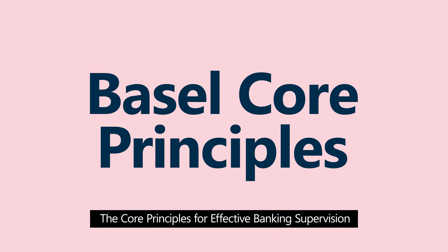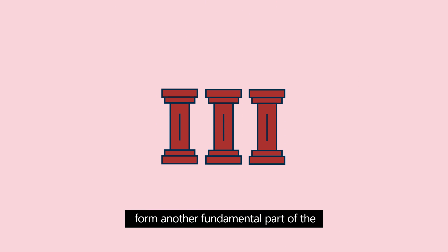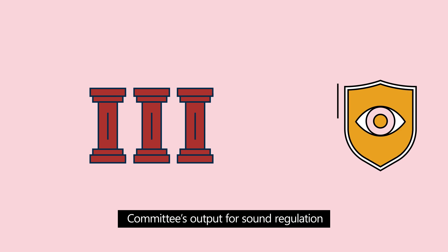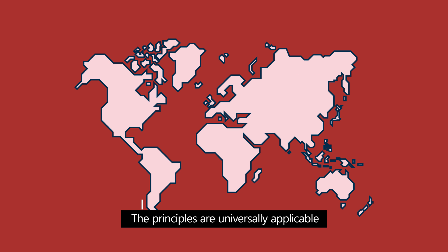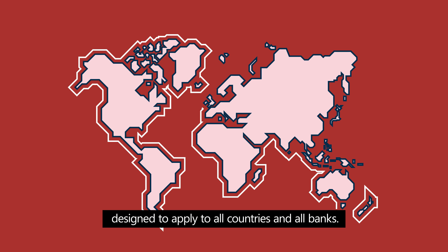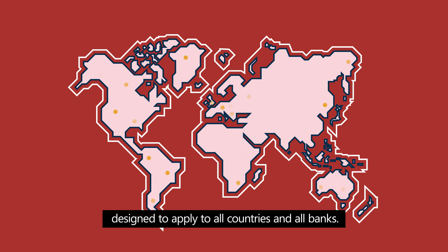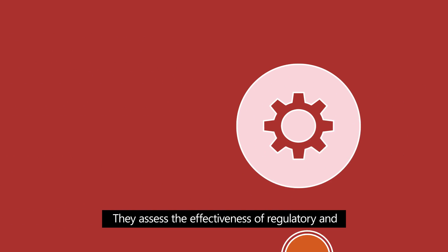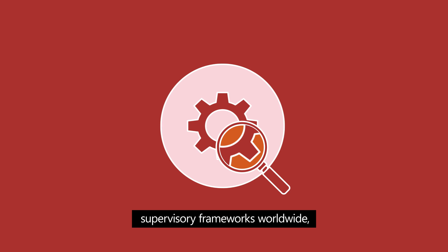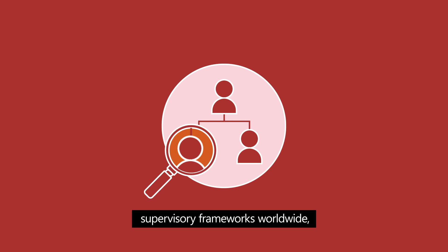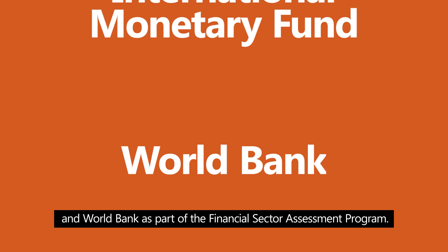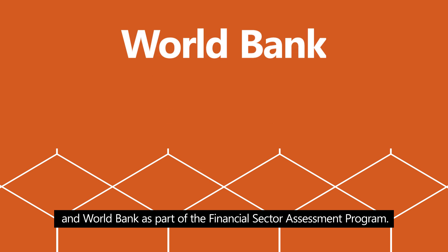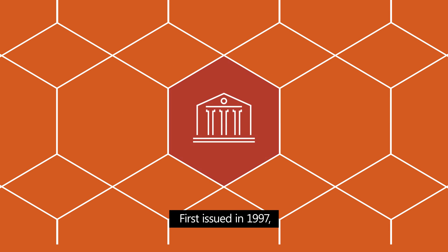The core principles for effective banking supervision form another fundamental part of the committee's output for sound regulation and supervision of banks. The principles are universally applicable, designed to apply to all countries and all banks. They assess the effectiveness of regulatory and supervisory frameworks worldwide, and are used by the International Monetary Fund and World Bank as part of the Financial Sector Assessment Programme.